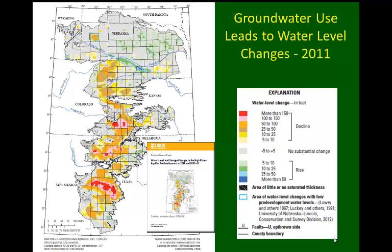Here is an example report from the High Plains Water Level Monitoring Study for 2011, produced by the U.S. Geological Survey and freely downloadable. The map shows that darker yellow to orange to red colors indicate a decline in water level, whereas bluish colors — from gray through green to light blue and dark blue — indicate greater and greater rises in water level. These changes are measured not just from the previous year, but from pre-development times, considered to be about 1950 in this case.